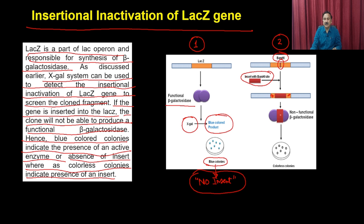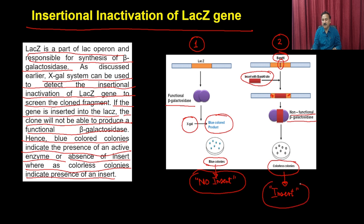The white colonies are very important because they contain the vector with the insert — these are the colonies you are looking for, and you can propagate them further for different types of applications.